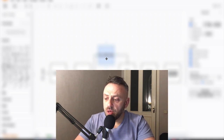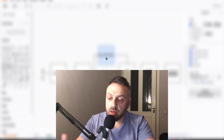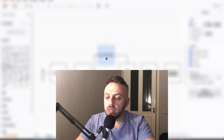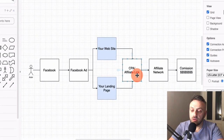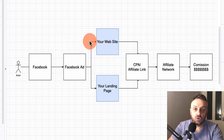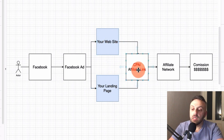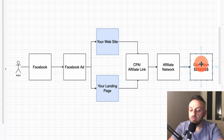Let me show you this diagram. The visitor is scrolling on Facebook, sees your ad, and then goes either to your website or to a landing page, and then to the affiliate link. You have to build this middle step — I'm going to show you a very easy way of doing this so your ads are fully Facebook compliant. Once they land on your content and click the CPA affiliate link, they go to the affiliate network and if they buy something, you get a commission.